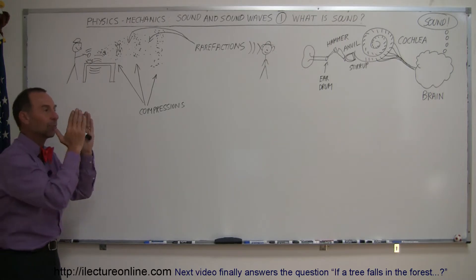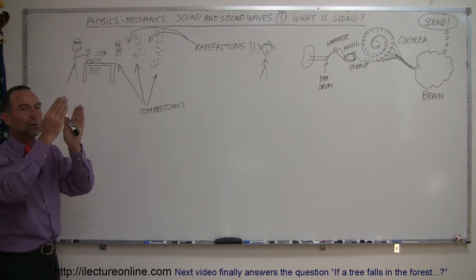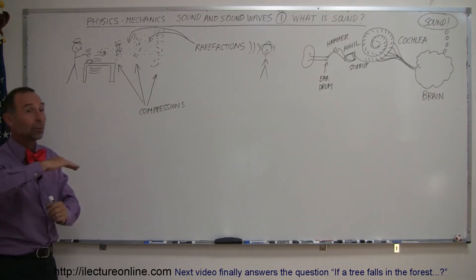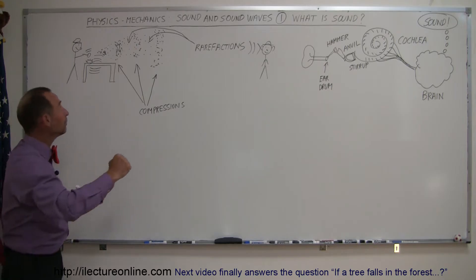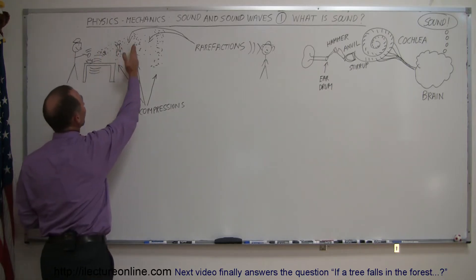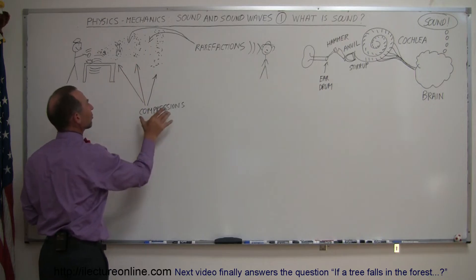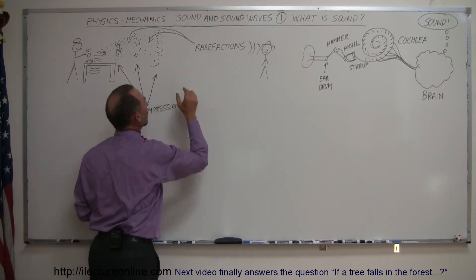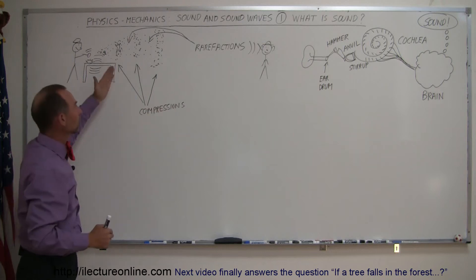So we have regions in the air that have compressed air and rarefied air. Compressed air and rarefied air where the pressure goes up and down. And so you can see the regions where we have compressed air, regions where we have rarefied air. So we call these compressions and we call these rarefactions. And those go radially outward in all directions.